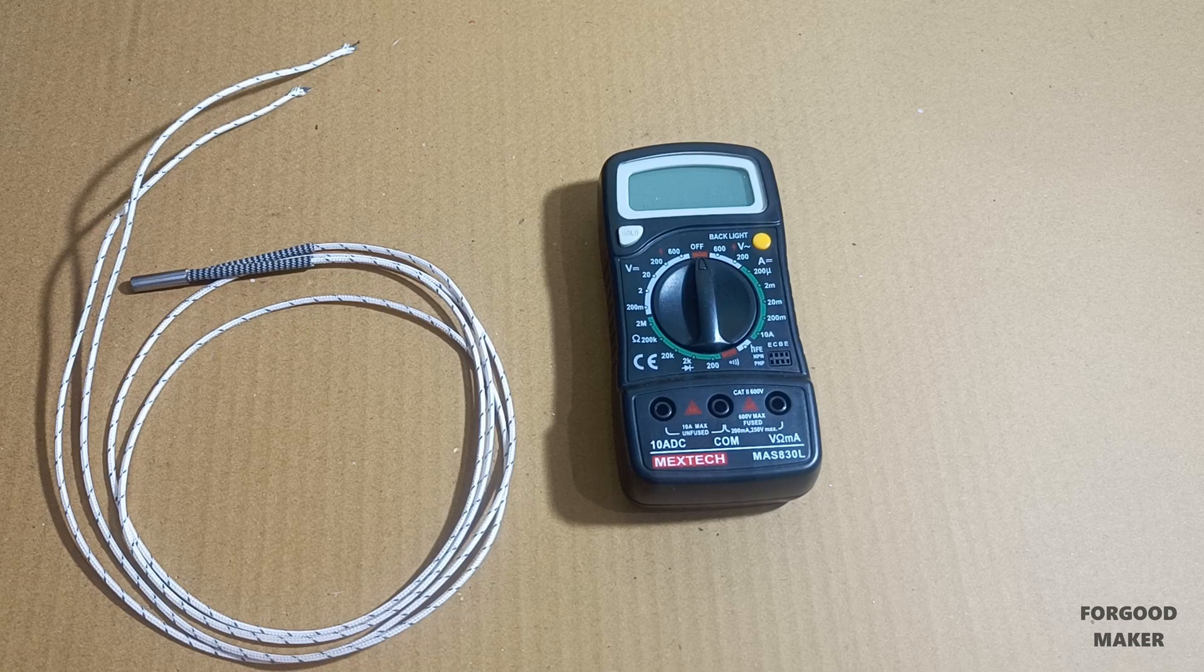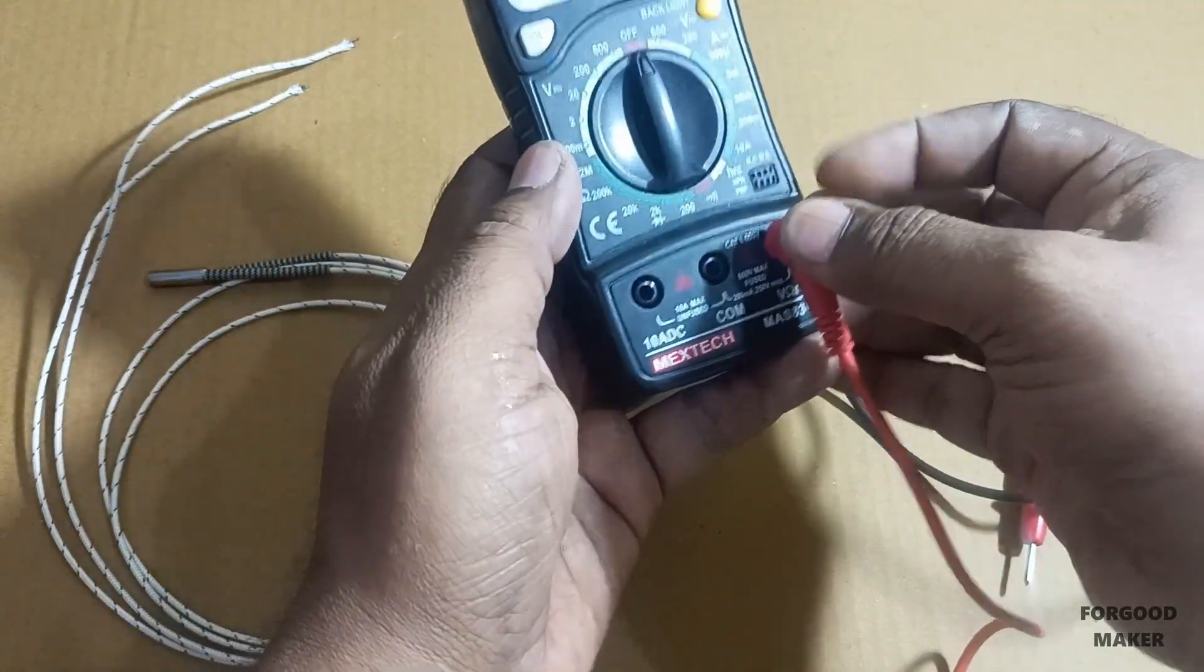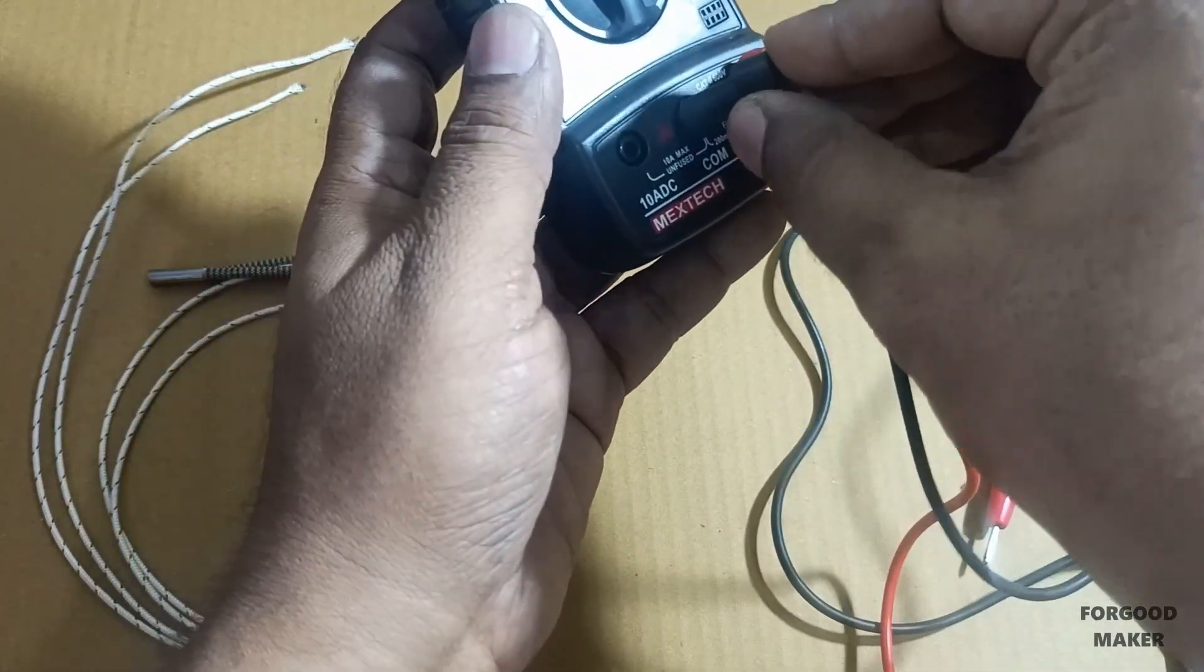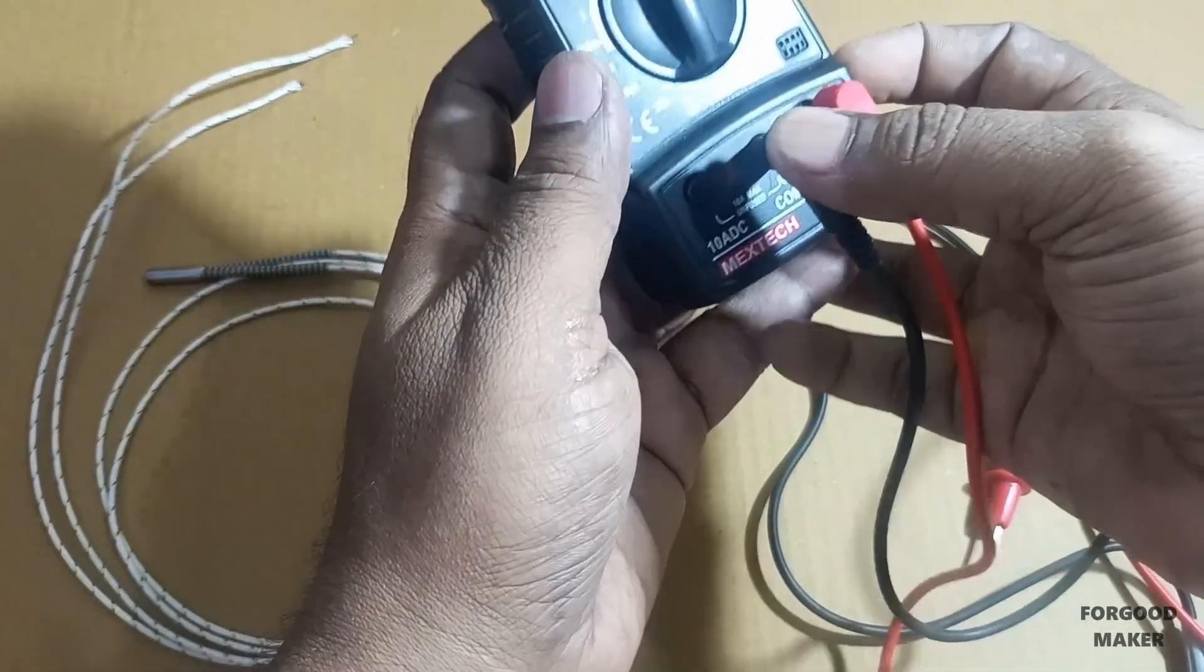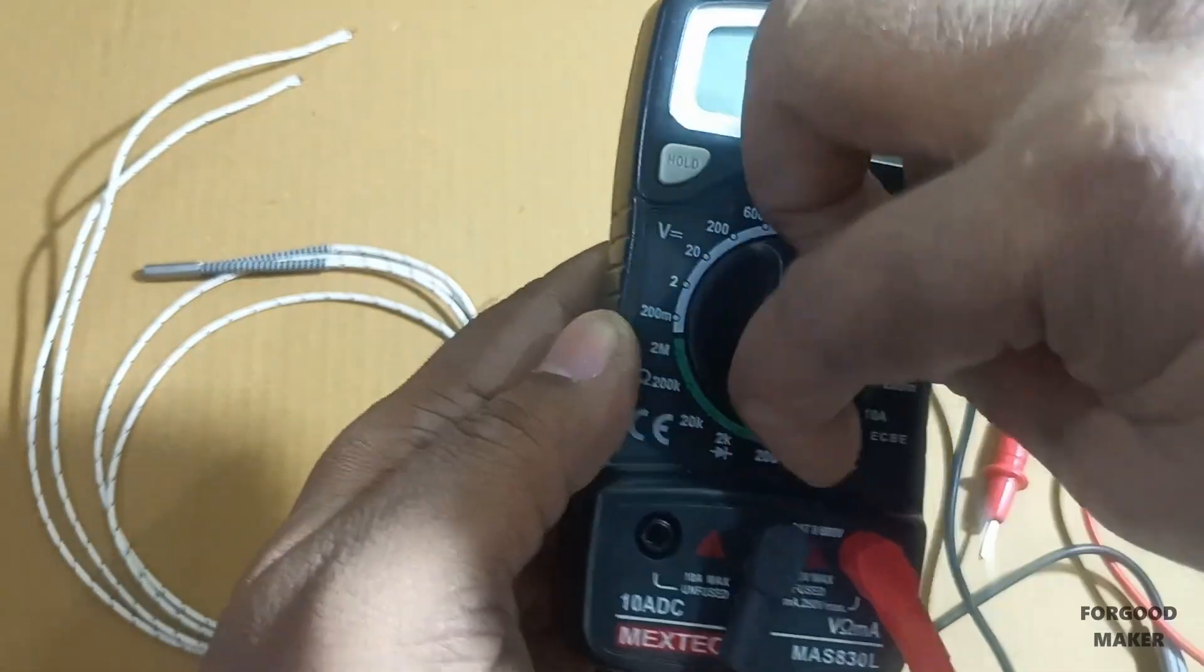Let's first measure the resistance of 24-volt heater cartridge using multimeter. Set the multimeter knob to 200 Ohms.